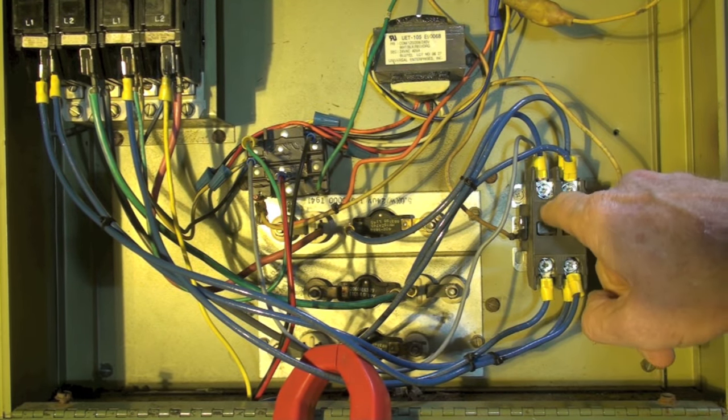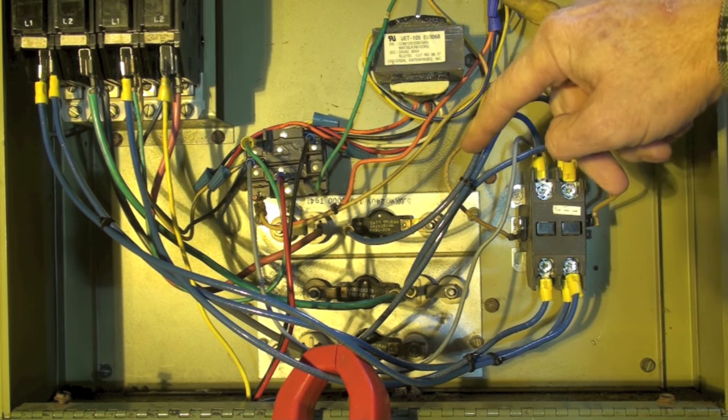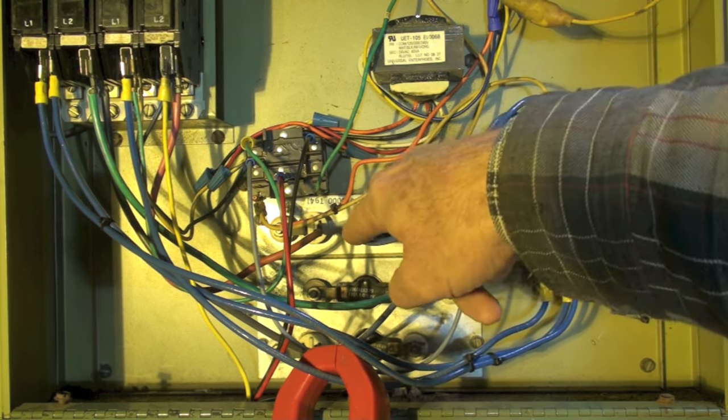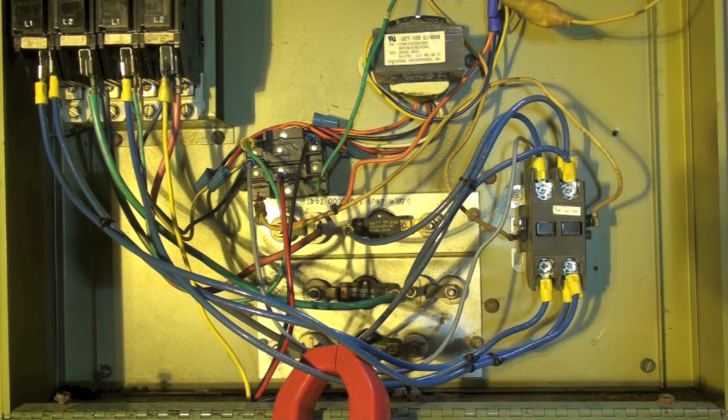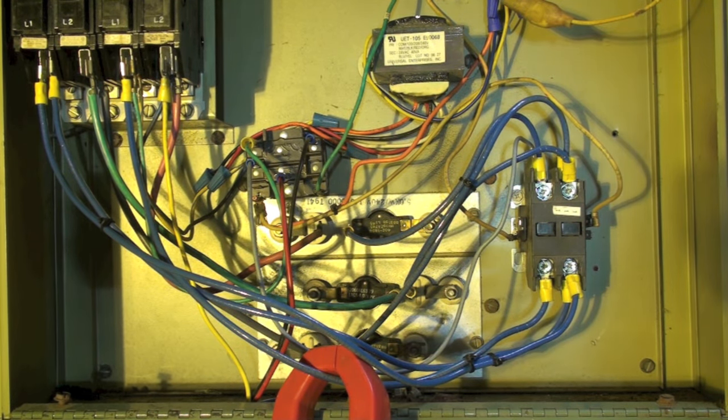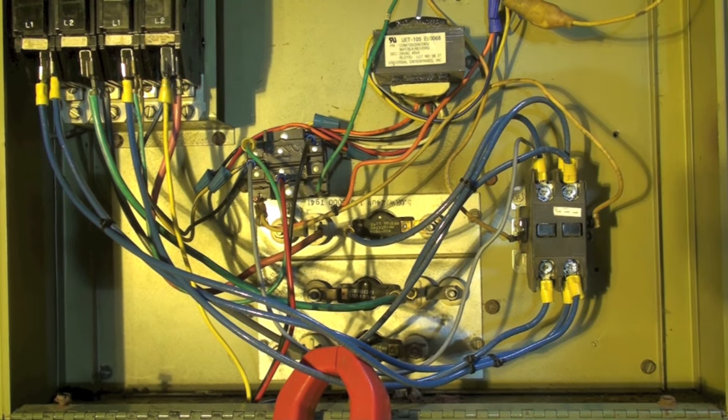So if I follow this out, this is going to this contactor right here that only has one element hooked to it and the power is going to this element. So I'm going to see if I can use my meter to troubleshoot this. I'm going to use a voltmeter now.